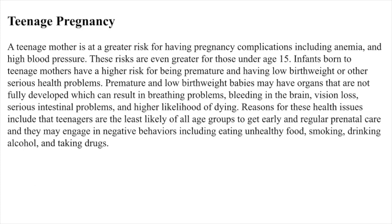Teenage pregnancy. A teenage mother is at a greater risk for having pregnancy complications, including anemia and high blood pressure. These risks are even greater for those under age 15. Infants born to teenage mothers have a higher risk for being premature and having low birth weight or other serious health problems. Premature and low birth weight babies may have organs that are not fully developed, which can result in breathing problems, bleeding in the brain, vision loss, serious intestinal problems, and a higher likelihood of dying. Reasons for these health issues include that teenagers are the least likely of all age groups to get early and regular prenatal care, and they may engage in negative behaviors including eating unhealthy food, smoking, drinking alcohol, and taking drugs.